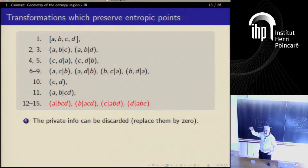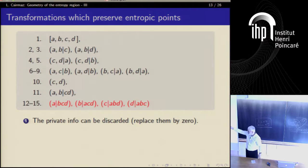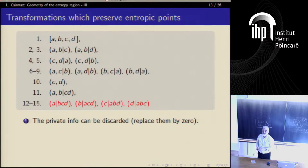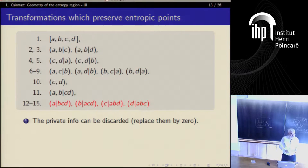I am interested in those cases when the Ingleton inequality is violated, so the very first coordinate should be negative or at least non-positive, and all the rest are automatically positive values. But there are 15 of them which is too much — we have to make it a little bit simpler.